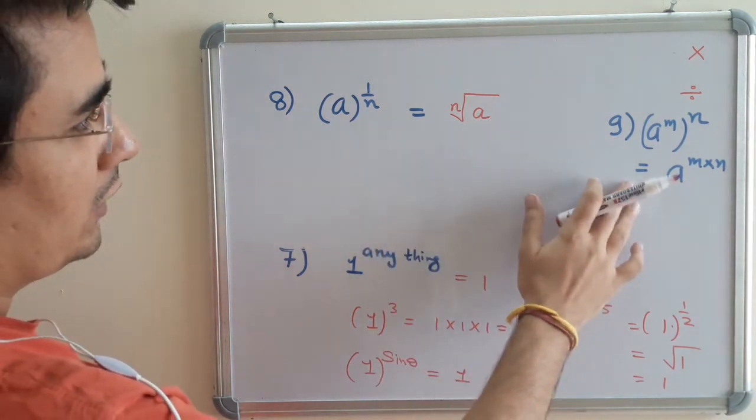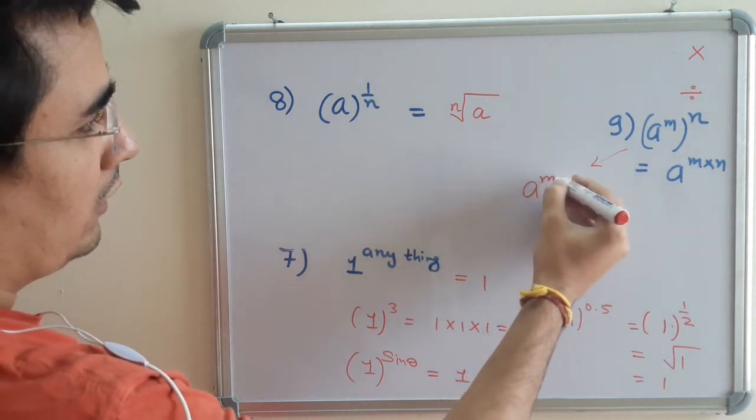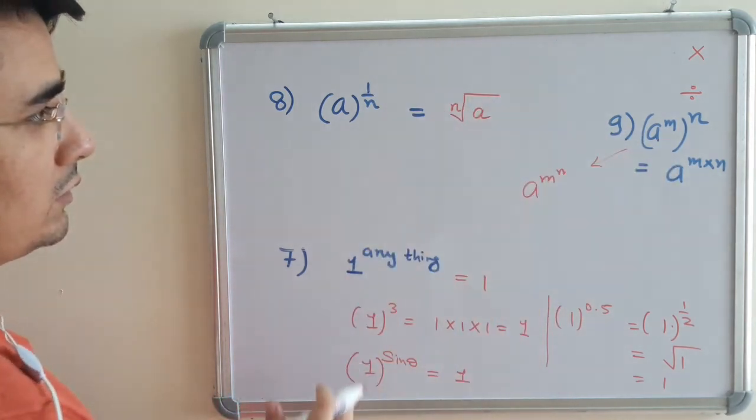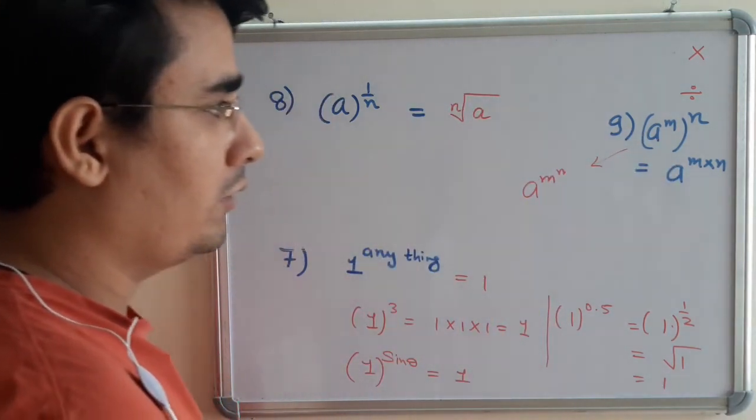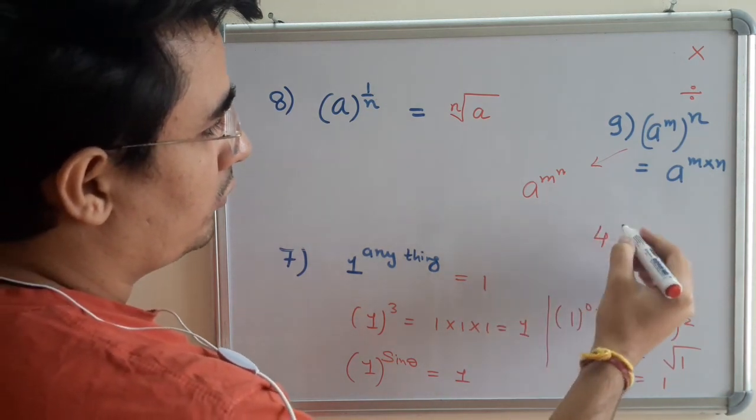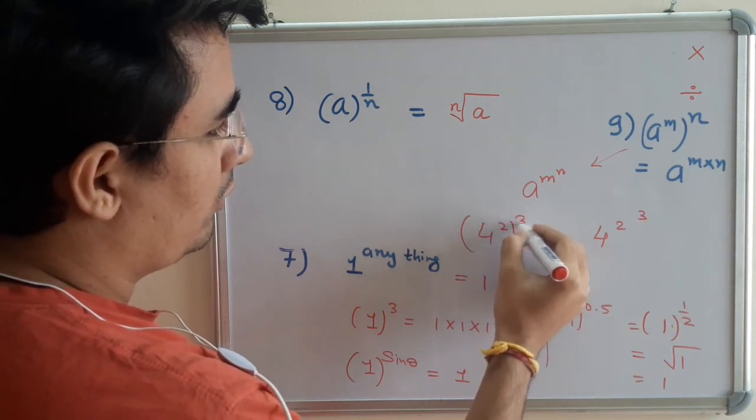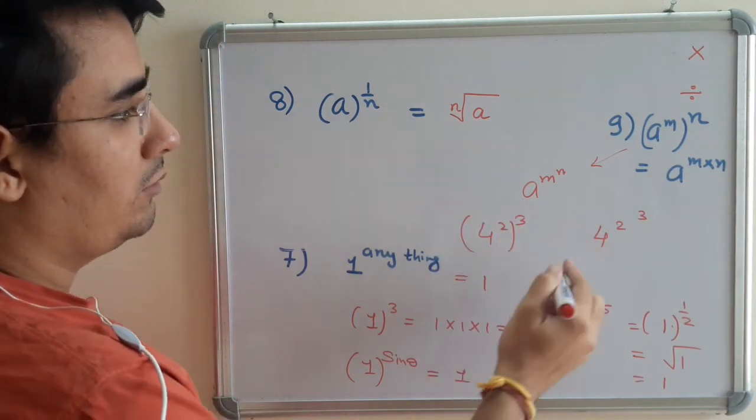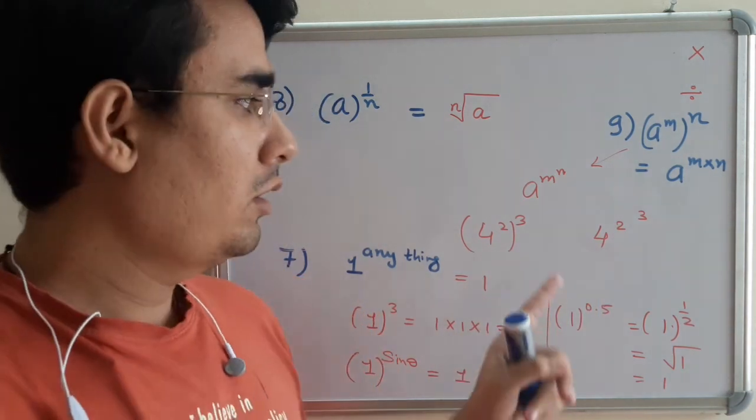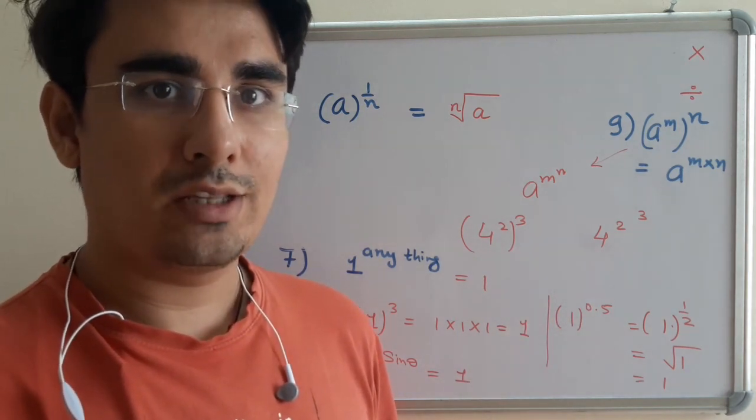Similarly here I will give you one question. If it is (a^m)^n, this is different from this. Discuss with your friend. I will give you one example. Suppose I take 4^(2^3) and (4^2)^3. Check yourself and tell in the comment section or ask, discuss with your teachers, how they are different. For now, thank you for watching. See you in the next video.